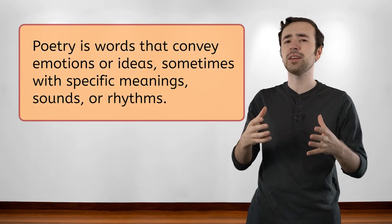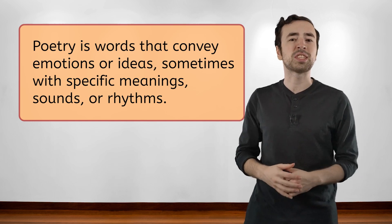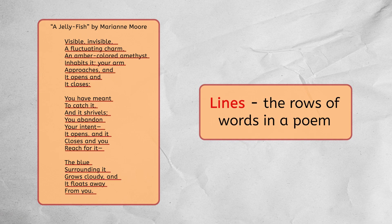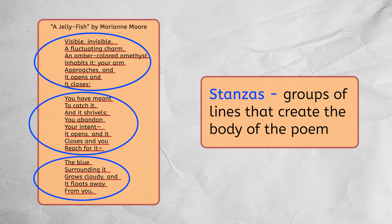Poetry is words that convey certain emotions or ideas, sometimes with specific meanings, sounds, or rhythms. The elements that create the general structure of a poem are lines and stanzas. Lines are the rows of words in a poem. While other pieces of writing might complete a sentence in one or two lines, poetry can continue a sentence through several lines. For example, in this poem, the last stanza — "the blue surrounding it grows cloudy and it floats away from you" — is one continuous sentence that takes five lines. Stanzas in poetry are the groups of lines that create the body of the poem. How many stanzas does it have? How many lines does this poem have? Pause the video to answer now in your guided notes.